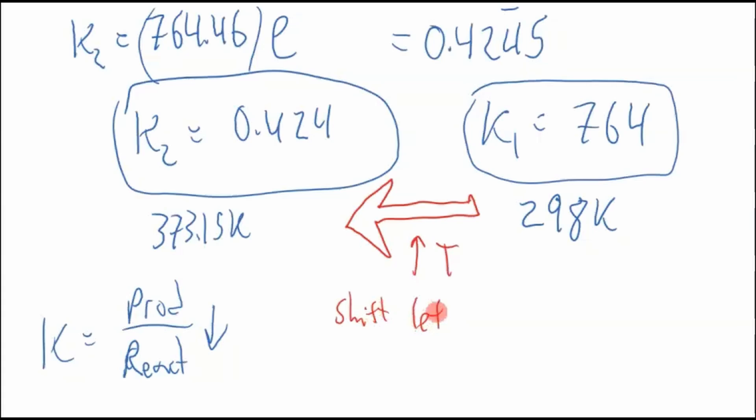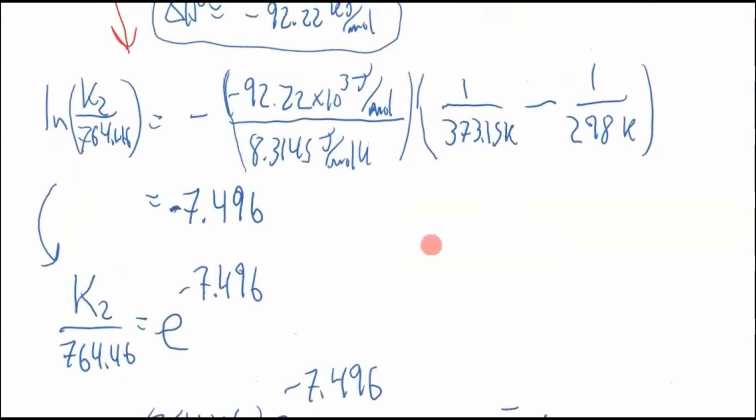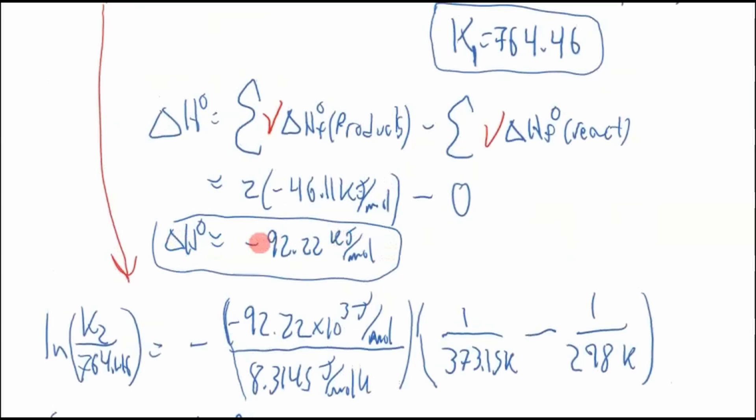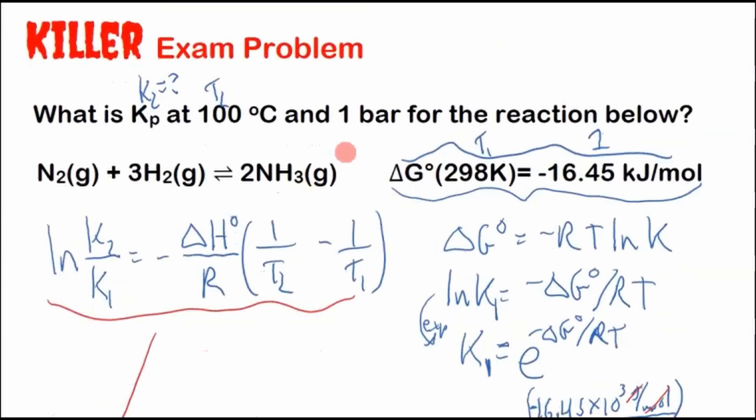That means this is a shift left. So we shift the reaction to the left. We got more reactants because we needed to make K smaller, right? It's products over reactants. So if we shift it to the left by increasing the temperature, that means this is an exothermic reaction. What was our ΔH? Our ΔH was negative. ΔH was negative, which means this is an exothermic reaction. So increasing the temperature will shift it to the left, which coincides with the numbers we got.